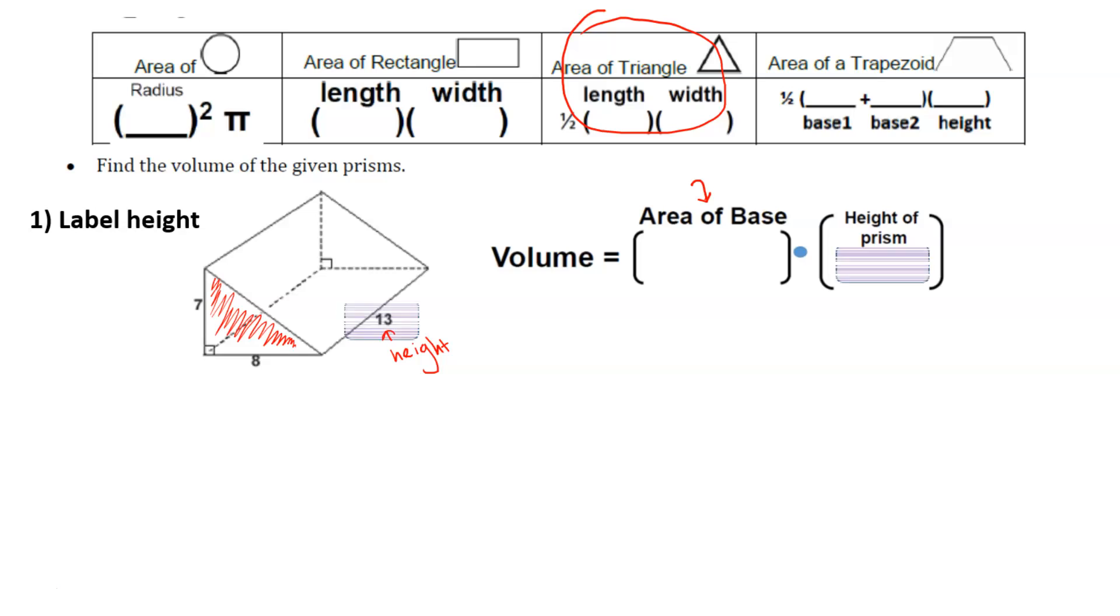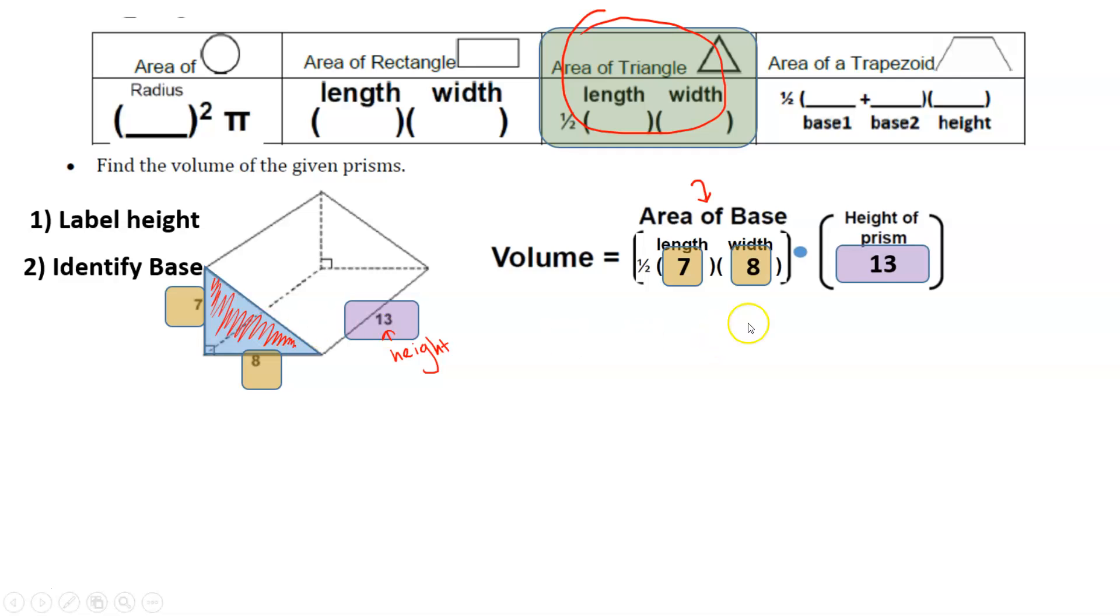Labeling our height. We're going to identify our base, which is a triangle. Notice that the length and width of our triangle is 7 and 8, so we're going to plug those numbers in. We'll multiply 7 times 8 together. Seven times eight is 56. One-half. What is 56 times 13? 728, and taking half of that, which essentially just is dividing by two, you'll find that the volume is 364.